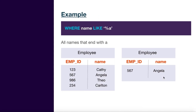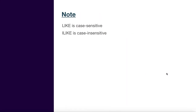When this query runs, you get the two names starting with capital 'C' — Kathy and Carlton. Now let's take another example where you want names that end with a small 'a'. In this case, we flip the percent to the front position: LIKE '%a'. When this executes, you get one name that ends with a small 'a', which is Angela.